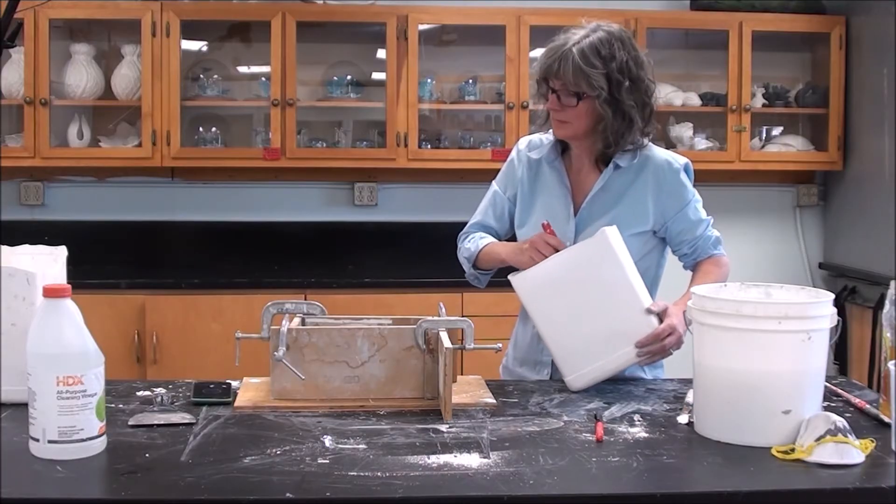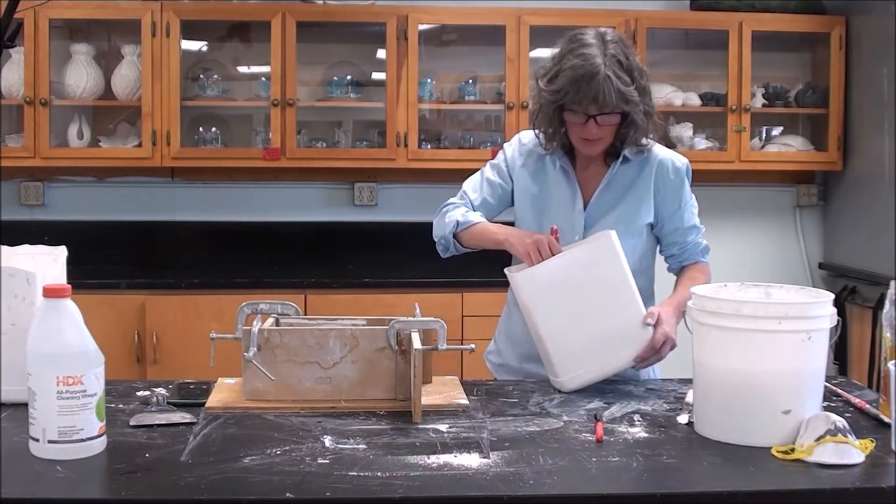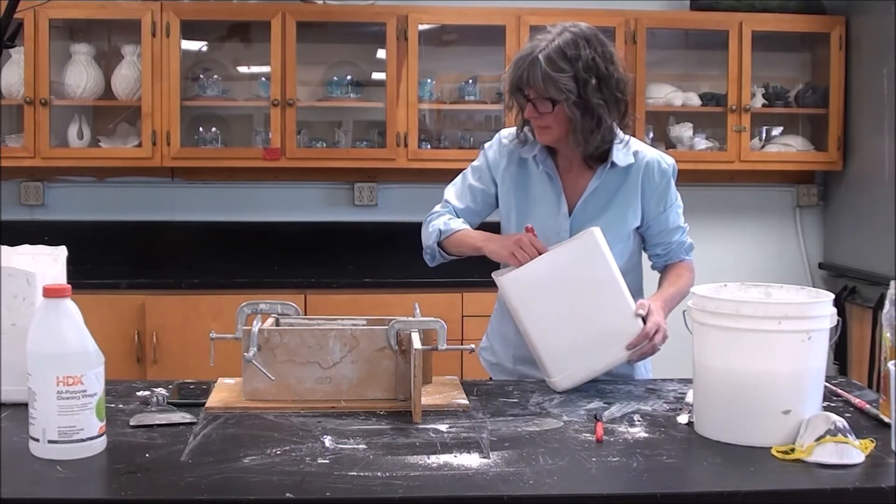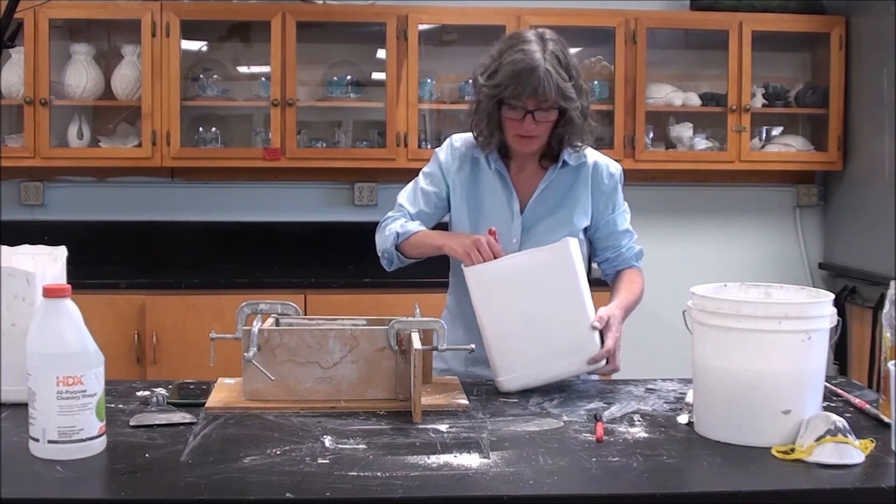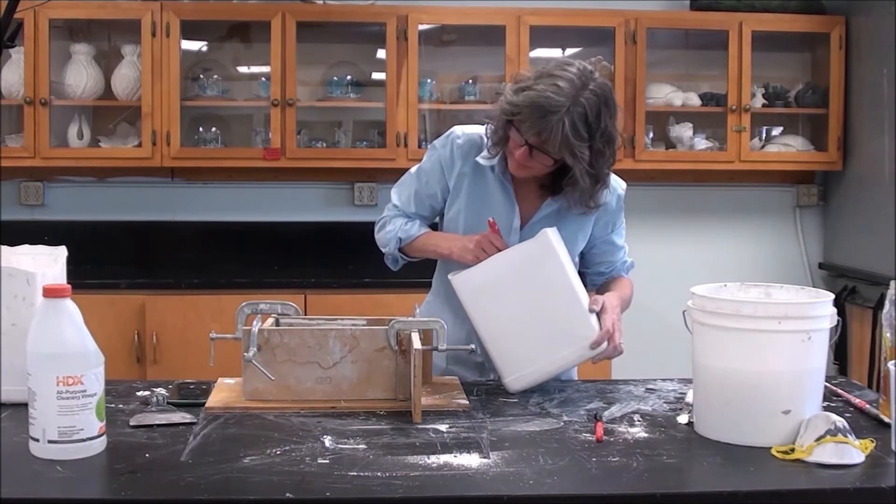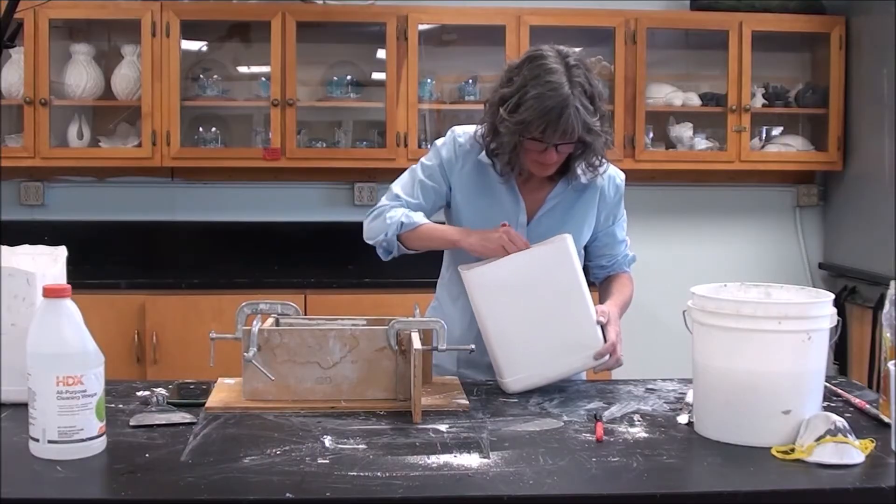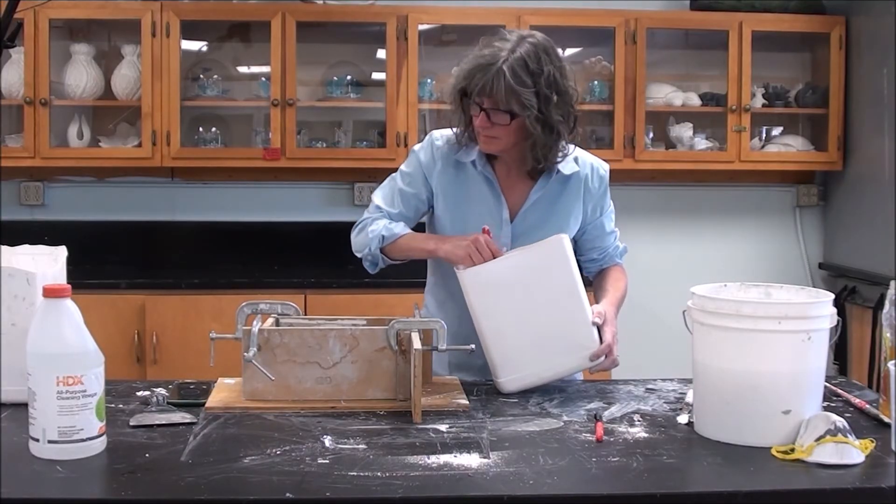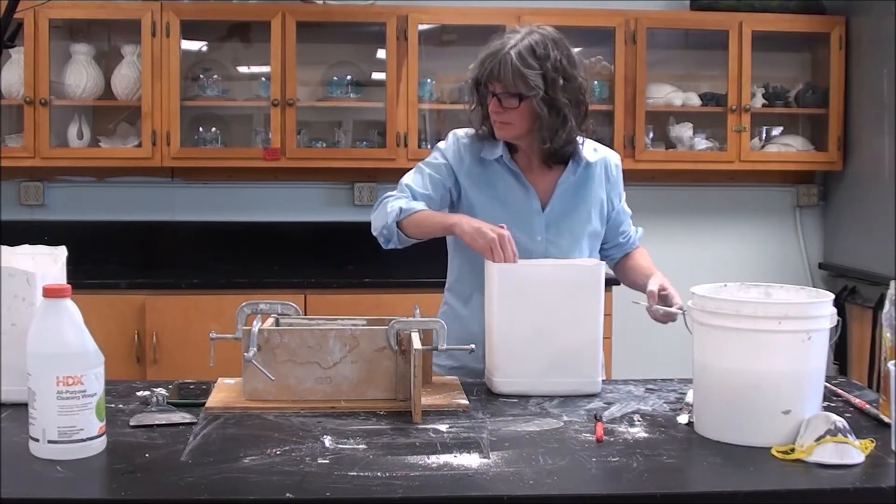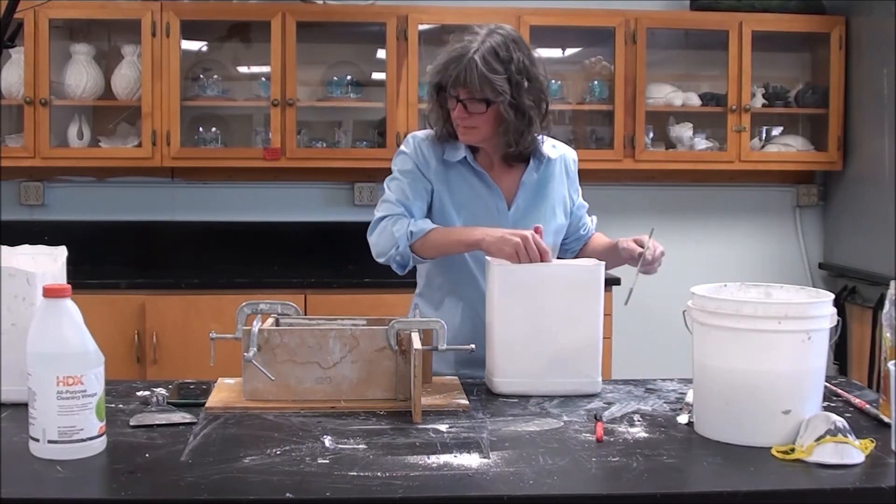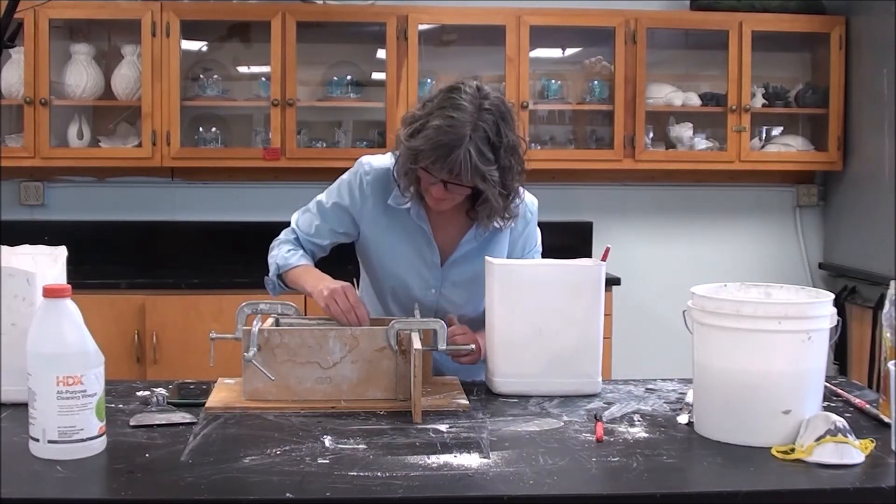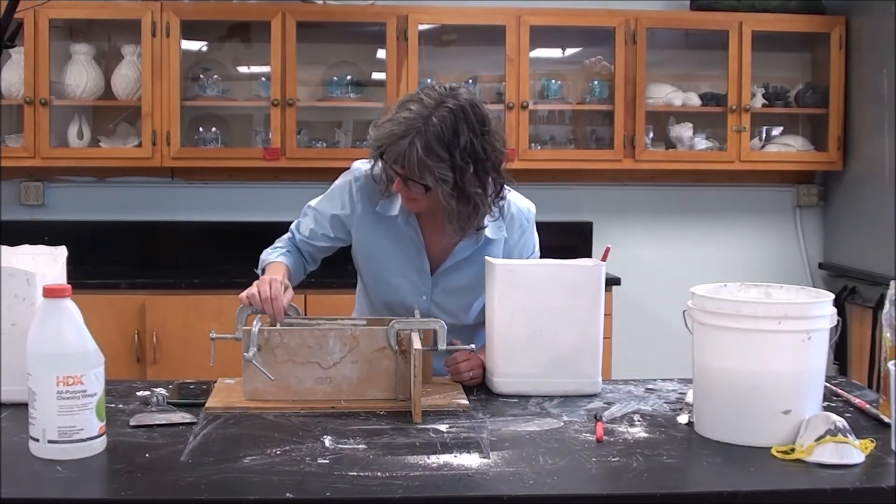One thing I didn't address earlier is how to decide how much water you will need to begin the plaster mixing process. I personally just eyeball it. You can do the method where you figure out your volume, which is length times width times height, and then you check the plaster chart to see how much plaster you need to weigh out and then how much water you need to measure out, but I don't ever bother with this. This is why I like the volume method because it is so fast and easy.